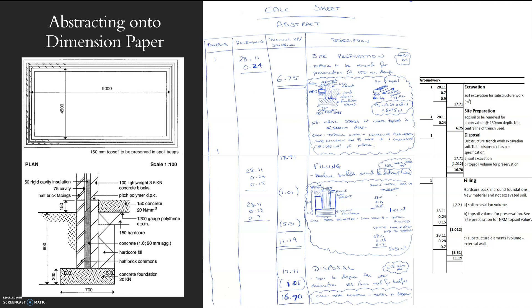Hi there, looking at a workshop. I'm trying to abstract onto dimension paper. This is an example we've been using previously. We've previously worked out the centre line method to work out the perimeter of this whole trench that we're going to dig out and do the substructure for.